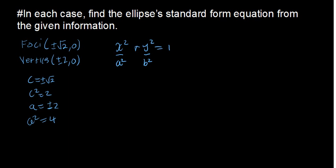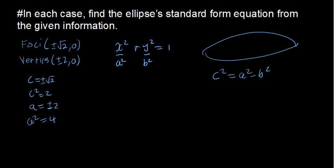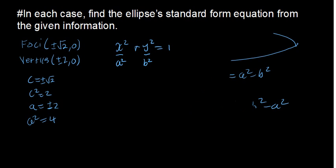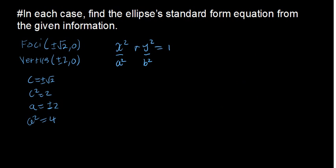Understanding the elongation of the ellipse is key. There are two forms: if the ellipse is elongated on the x-axis, then c squared equals a squared minus b squared. But if it's elongated on the y-axis, then c squared equals b squared minus a squared. In this case, a is greater than b, so we use c squared equals a squared minus b squared.